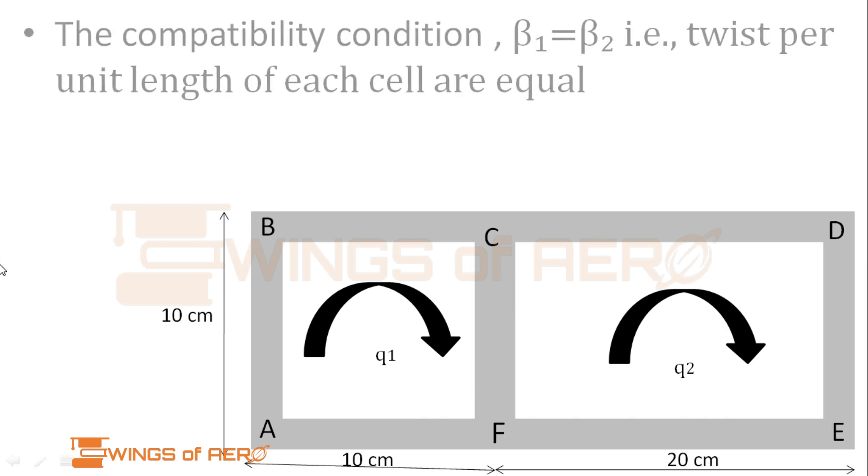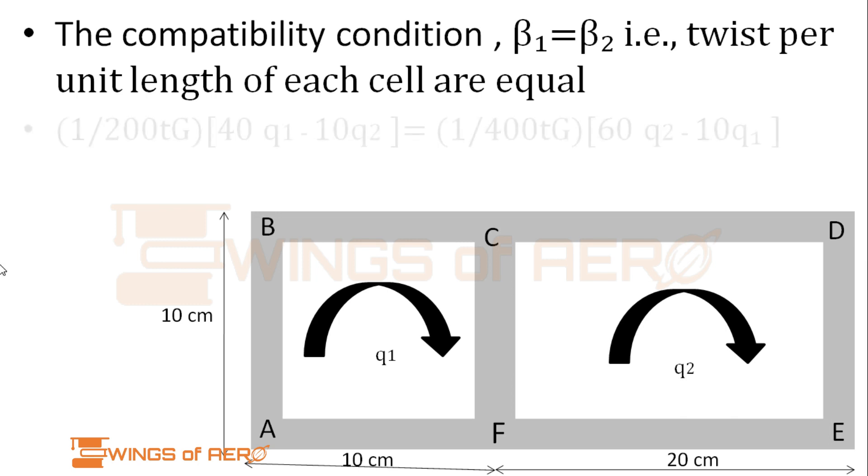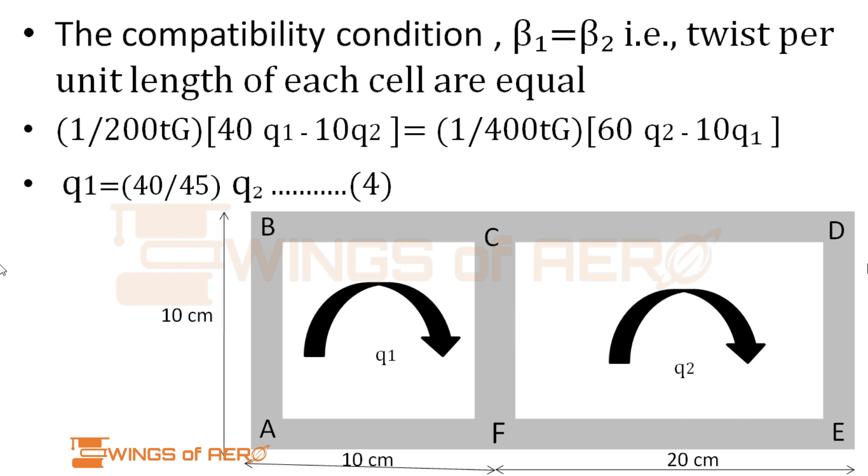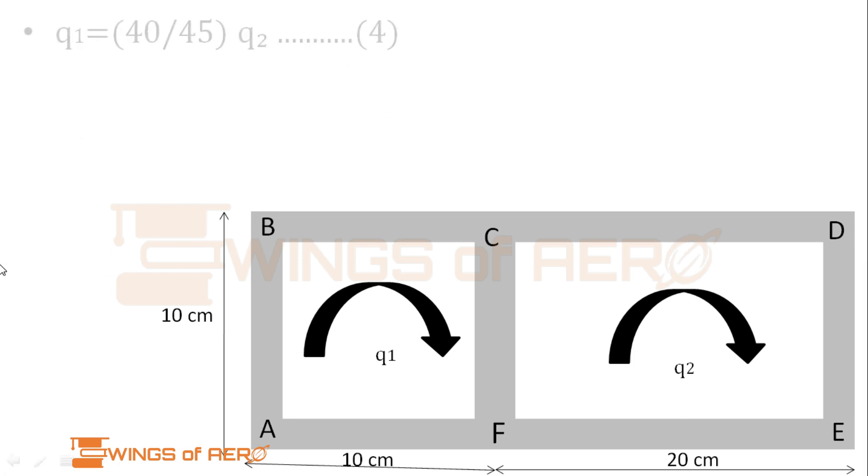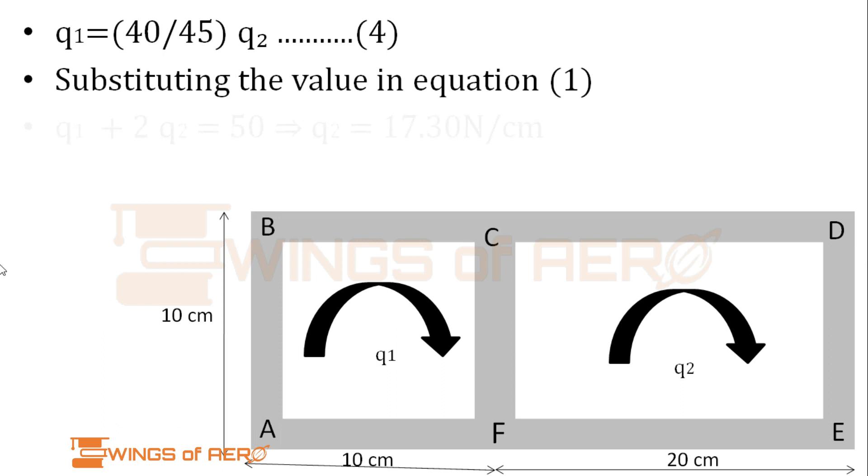Now as per our condition, beta 1 equals beta 2. Simplifying those two equations from equation 2 and equation 3, canceling the common terms t and g, we get q1 equals 40 by 45 q2. Name this as equation 4.